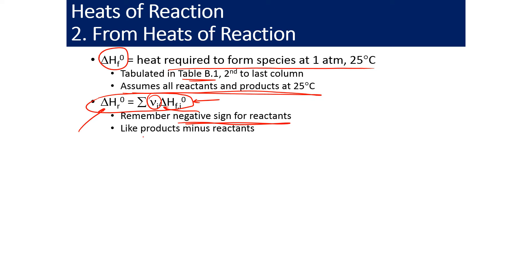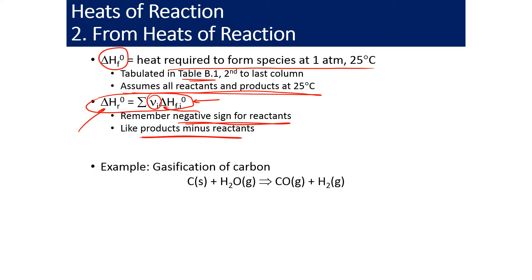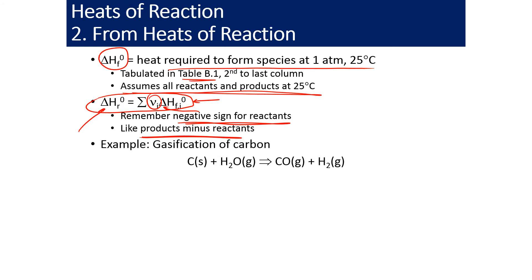We can get the heat of reaction from two places: look it up in a table, or compute it from heats of formation. Remember that negative signs apply to reactants for the stoichiometric coefficients — it's products minus reactants. Let's look at an example: the gasification of carbon, where carbon solid plus steam produces carbon monoxide and hydrogen.